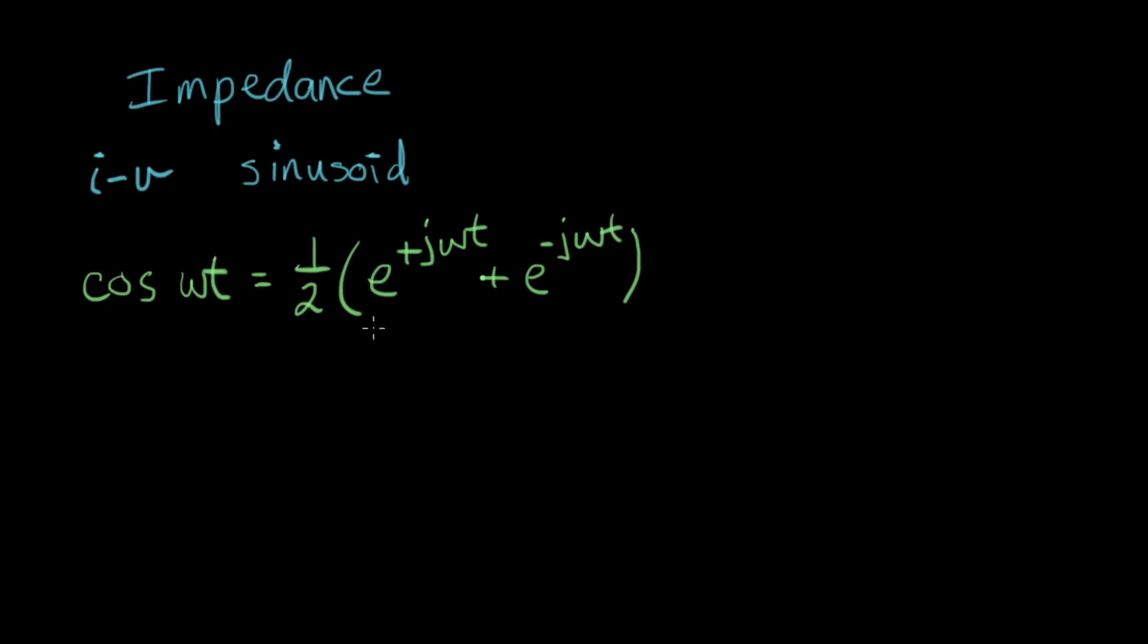And what I'm going to do now is look at what happens when we use this as an input signal. If I have two of these, I can reassemble them into a cosine wave. And we like to use these exponentials because they go through the differential equations of a circuit really easily. So what I'm going to do is develop the IV equations for the resistor, inductor, and capacitor in terms of this kind of input.